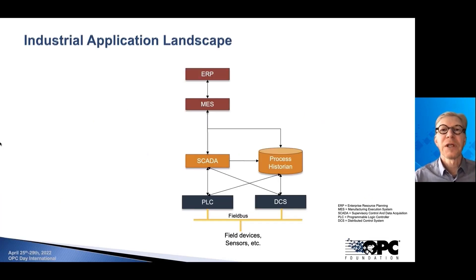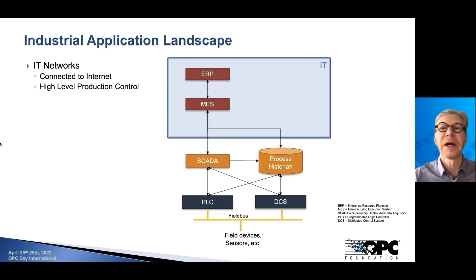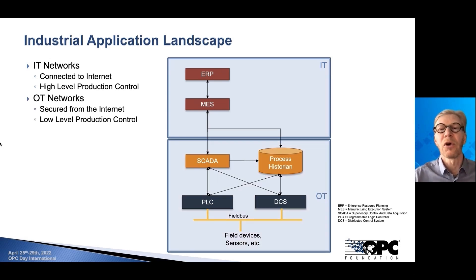Let's first look at the traditional industrial application landscape, where we have these different applications that are probably most familiar to you. We have the ERP systems — enterprise resource planning — and manufacturing execution systems that typically reside in the IT network, where we have the high-level production control. These are typically connected to the Internet, so the security of this network is not as good as it is on the lower OT network, where we have low-level production control from the SCADA applications, PLCs, and DCS systems.